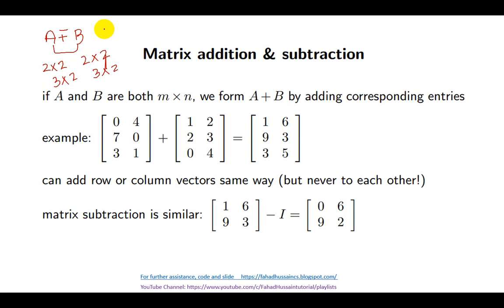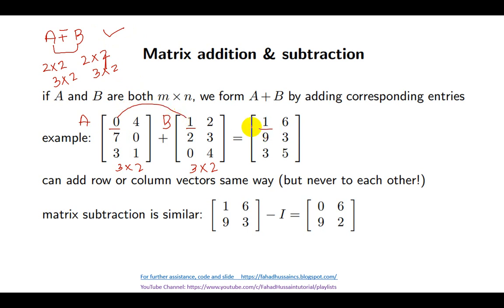Element-wise means we add each corresponding number from one matrix to the other. For example, if A and B are both M by N matrices, we can perform A plus B by adding corresponding entries. Here matrix A and matrix B are both 3 by 2. So element-wise: 0 plus 1 is 1, 4 plus 2 is 6, 7 plus 2 is 9, 0 plus 3 is 3, 3 plus 0 is 3, and 1 plus 4 is 5. This is the resulting matrix of A plus B.